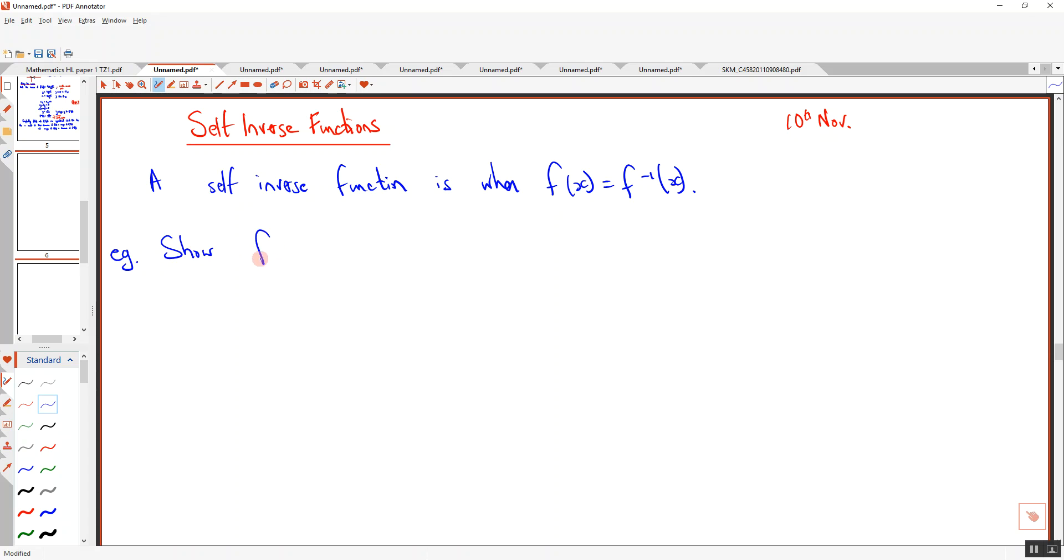How would that happen? Okay, well I'll show you. Here's an example of a self-inverse function. So show that f of x equals x over x minus 1 is a self-inverse function.